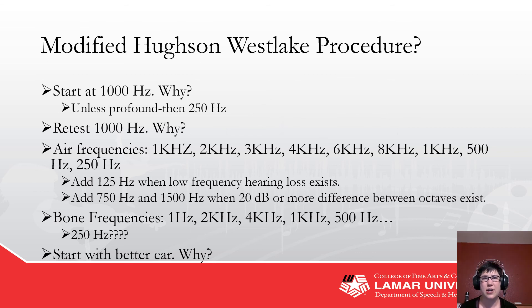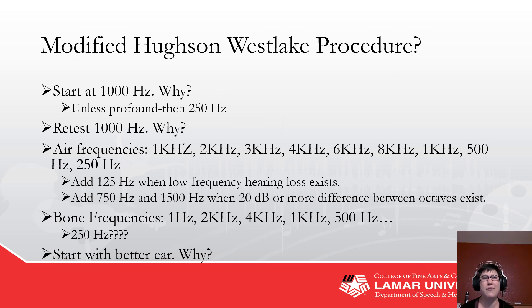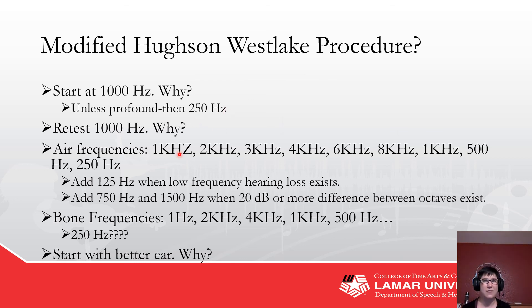We start at 1,000 Hz — it's due to psychoacoustical effects. That seems to be the most recognizable frequency for most people. Unless they have like profound hearing loss and a corner audiogram, in which case starting at 250 Hz can help. The standard order is 1,000, 2,000, 3,000, 4,000, 6,000, 8,000, retest 1,000, then 500 and 250 Hz. If all they have is low frequency hearing, why do all the high frequencies only to come back to do 500 and 250?